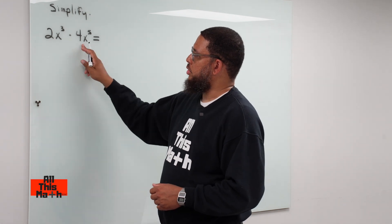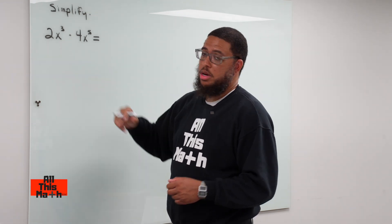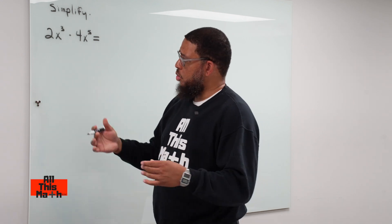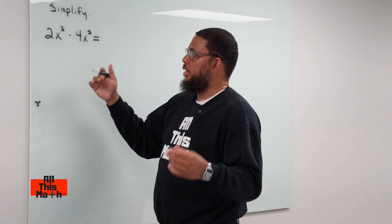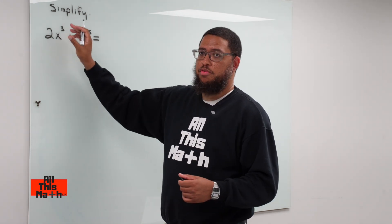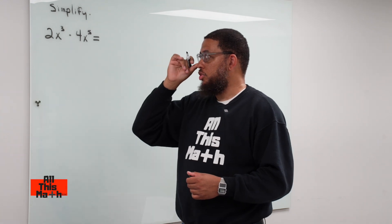Make sure you know that 2 and 4 are what we call coefficients. Coefficients are essentially the big numbers. They tell us how many of the variable we have, or how many of the variable term we have.